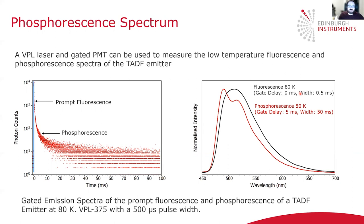One final important parameter to measure in TADF research is the phosphorescence spectrum. By measuring the spectrum of the fluorescence and phosphorescence, you can calculate the energy level splitting between the singlet state and the triplet state. By using a VPL laser and the gated PMT discussed earlier, we can measure the low temperature fluorescence and phosphorescence spectrum of the TADF emitter. Here is the photoluminescence decay of the emitter measured at 80 Kelvin, showing two components: the prompt fluorescence and a phosphorescence.